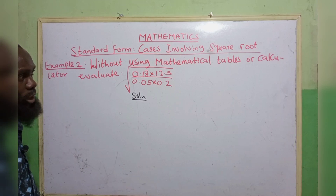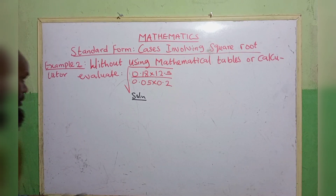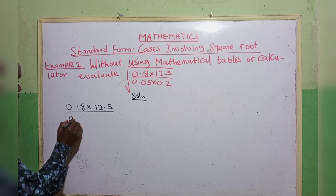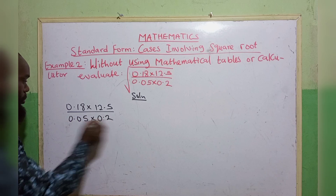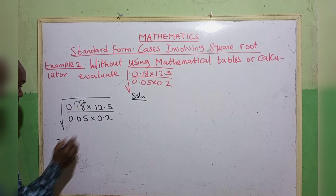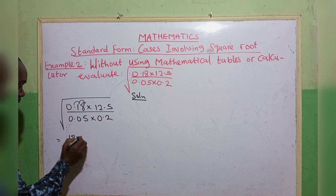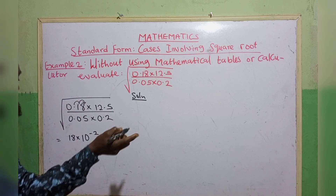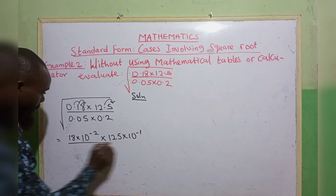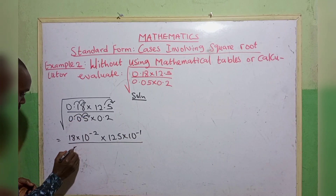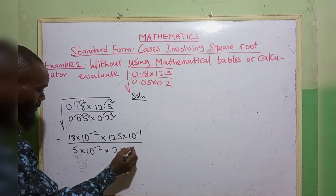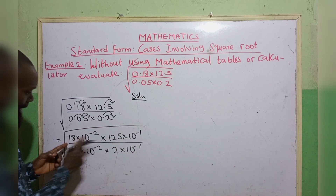Example 2: without using mathematical tables or a calculator, evaluate the square root of 0.18 times 12.5 divided by 0.05 times 0.2. Moving the decimal points: 0.18 becomes 18 times 10 raised to the power of minus 2; 12.5 becomes 125 times 10 raised to the power of minus 1; 0.05 becomes 5 times 10 raised to the power of minus 2; and 0.2 becomes 2 times 10 raised to the power of minus 1. Note that all these are joined together by multiplication.